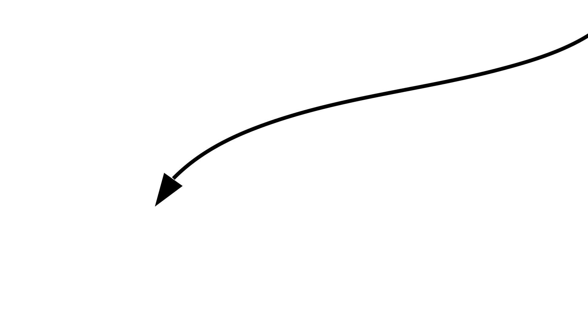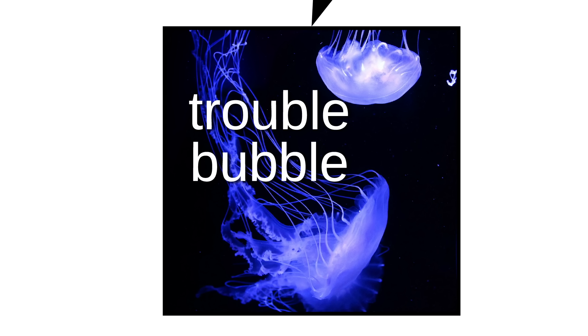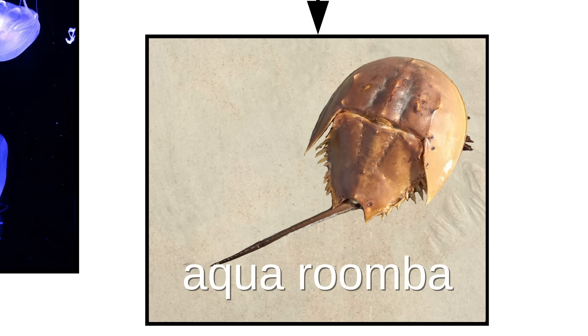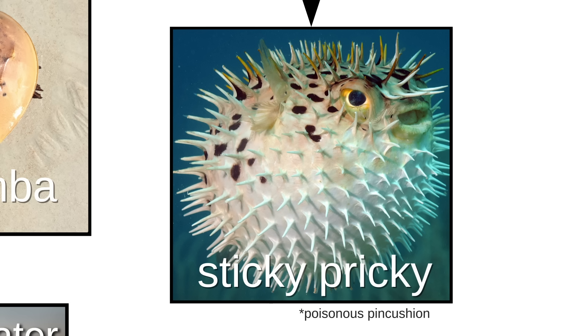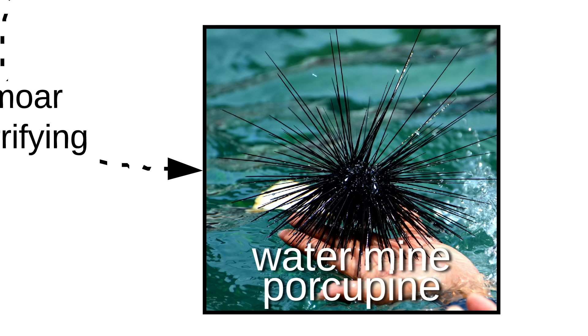There are tons of blub blub nopes, like the floaty nopey, sometimes called the trouble bubble. Then there's the aquatic sock puppet, aquaroomba, and scissory water spider. And of course, we can't forget the buttersauce cockroach, sticky-pricky, and its even more terrifying relative, the watermine porcupine.